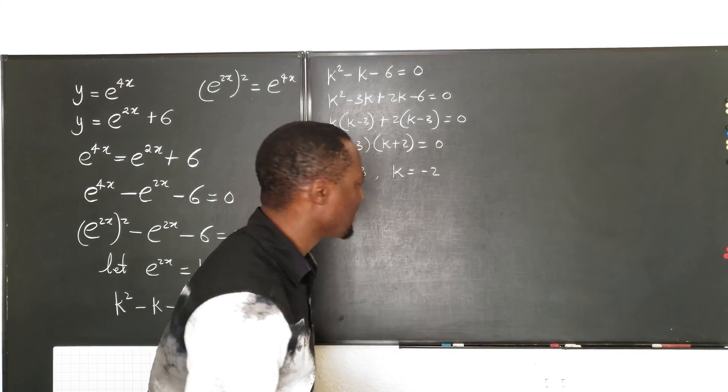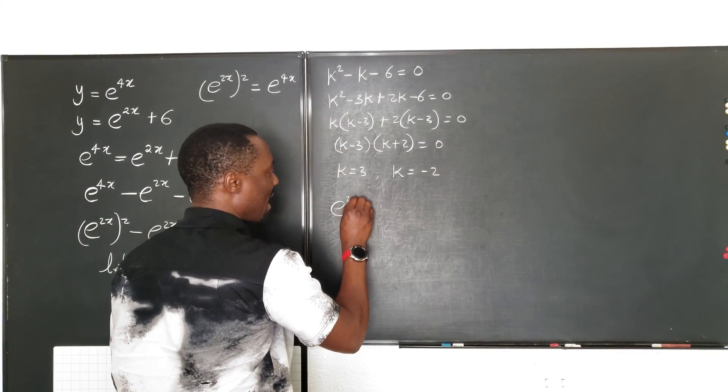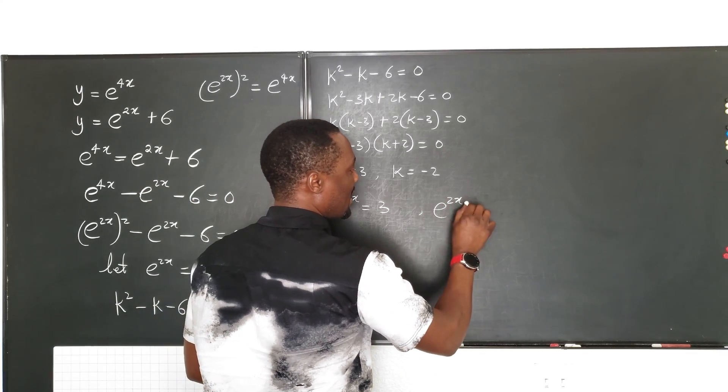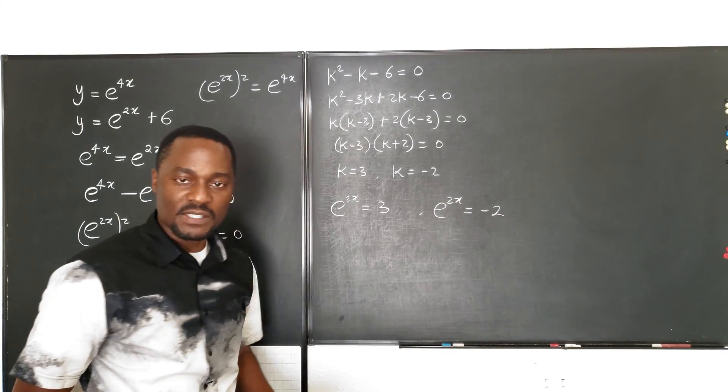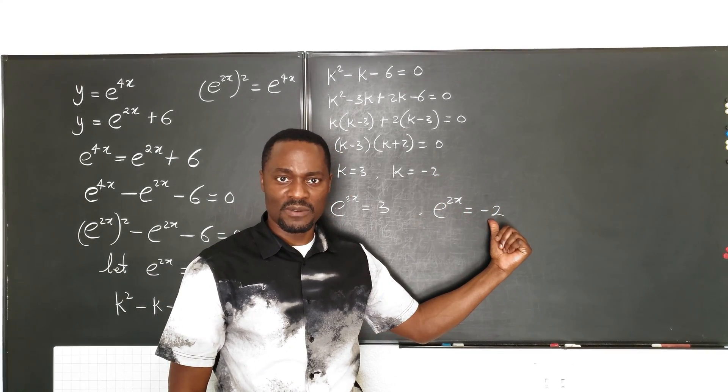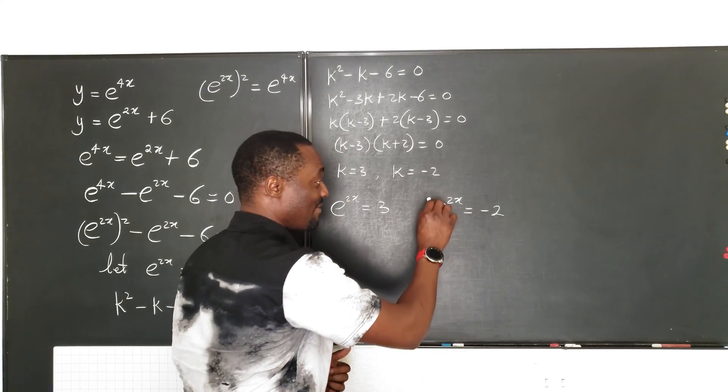And we can take these two numbers and plug them in here. e to the 2x equals k. Let's see how that's going to work out. So e to the 2x equals 3, that's one option. When we say e to the 2x equals negative 2. Now, listen, you cannot raise e to a power and suddenly it becomes a negative number.